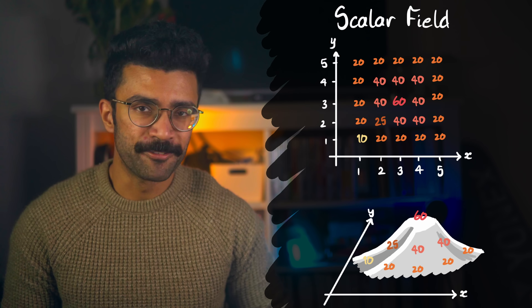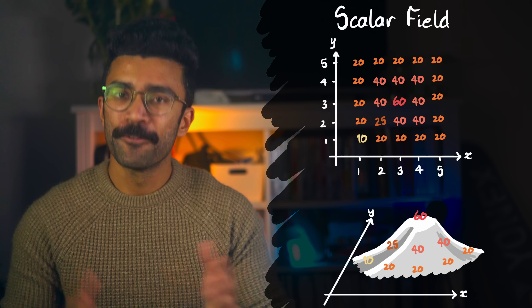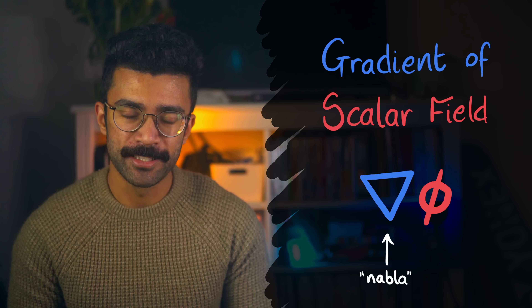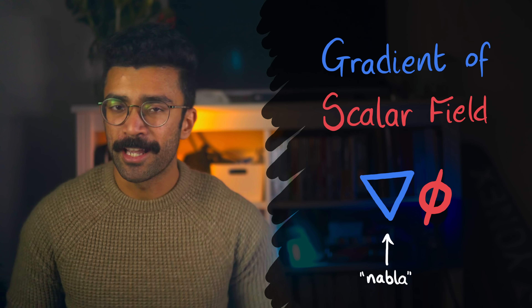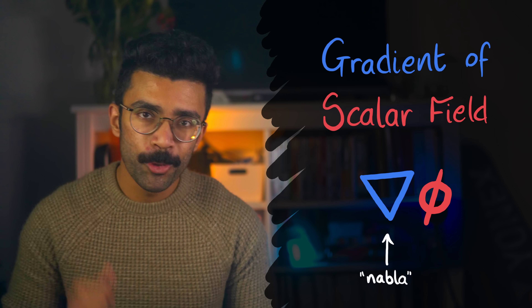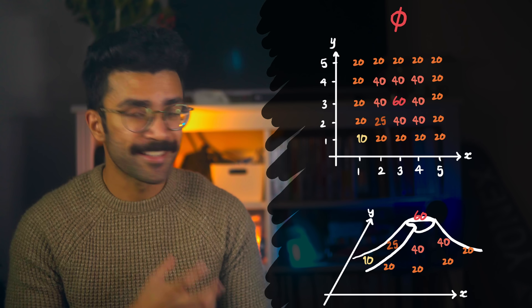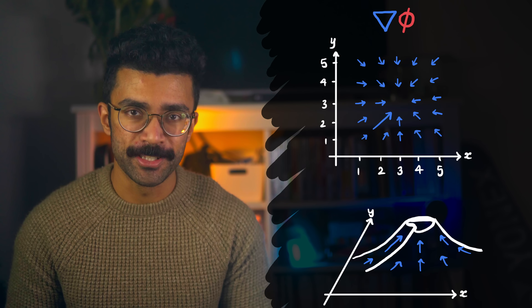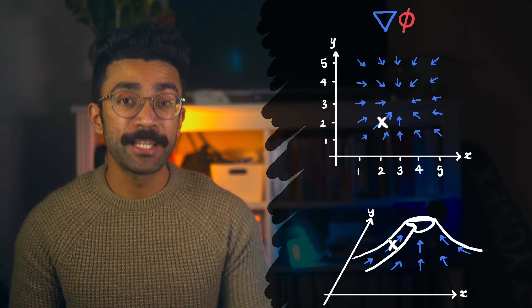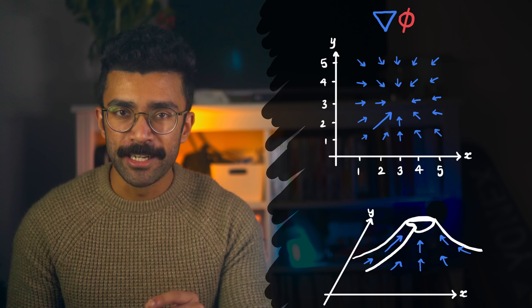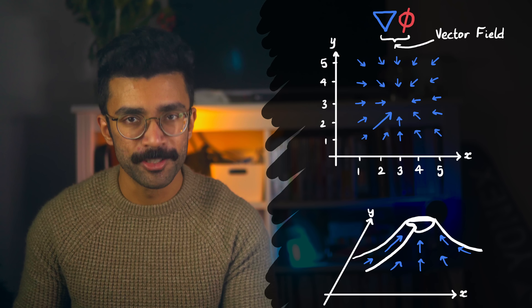We can do a lot more with scalar fields on top of finding the value of whatever it represents at each point in space. For example, we can find what is known as the gradient of this field. This is a mathematical function, written as the nabla operator — this downward pointing triangle — being applied to our scalar field phi. Basically, the gradient operator takes this scalar field and tells us which direction the scalar field changes in most quickly, as well as how strong that change is at every point in space. At a given point, we can see that the biggest increase from our current value is in a certain direction, so our gradient field points in that direction, and the size of the arrow represents the size of the change. What we've done here is generated a vector field, and this vector field just happens to be the gradient of our original scalar field.